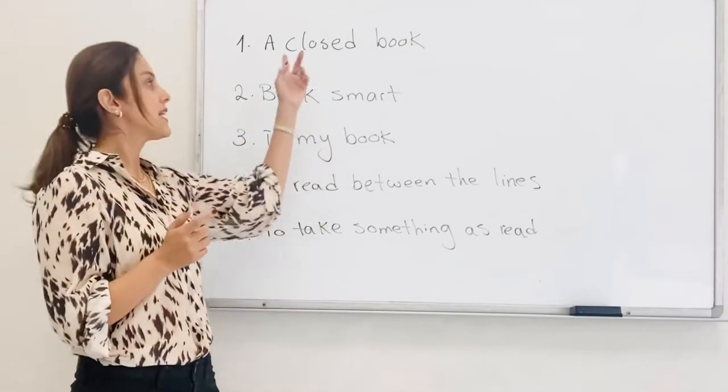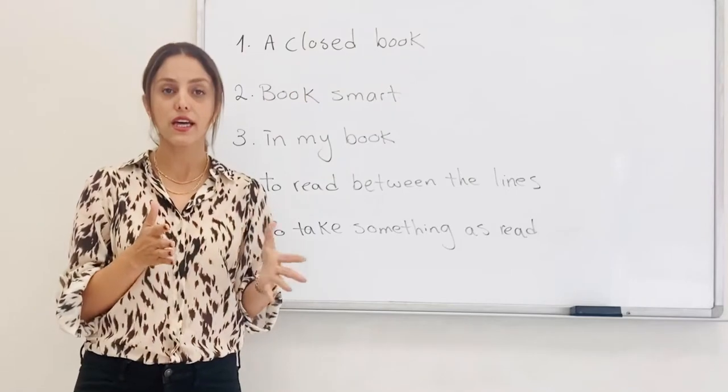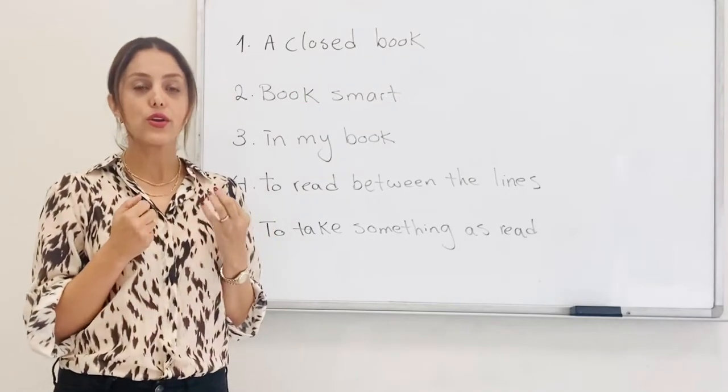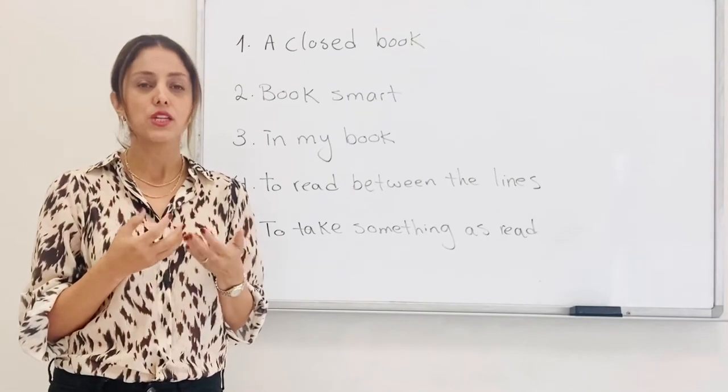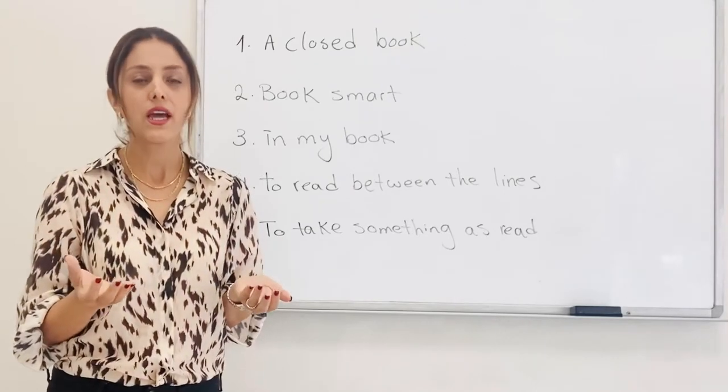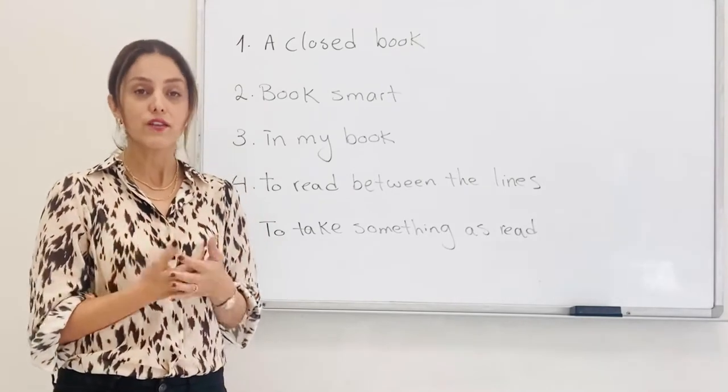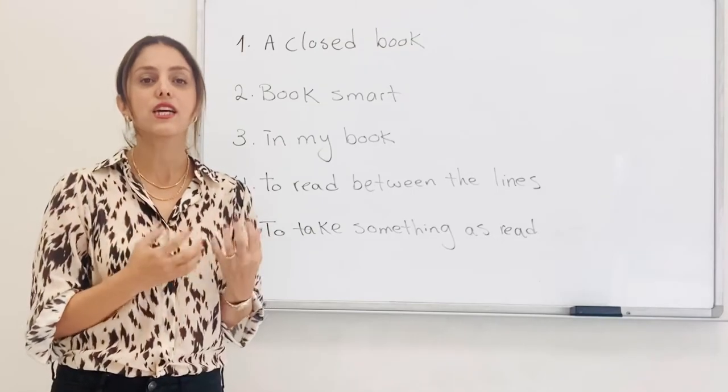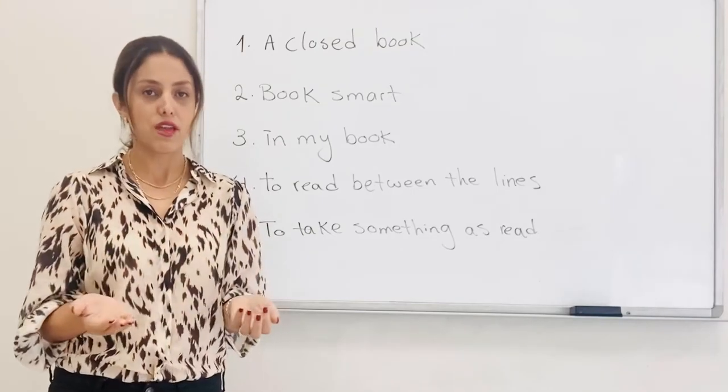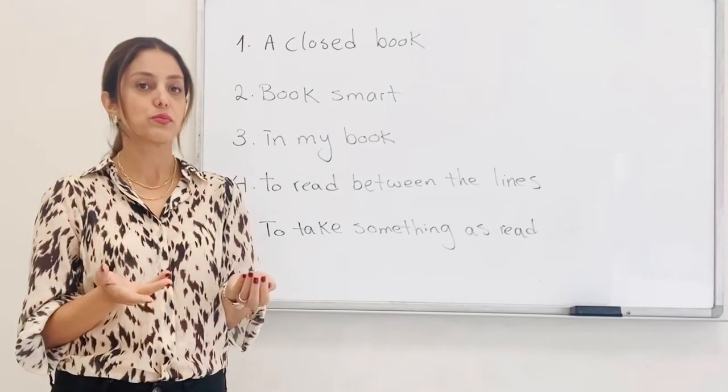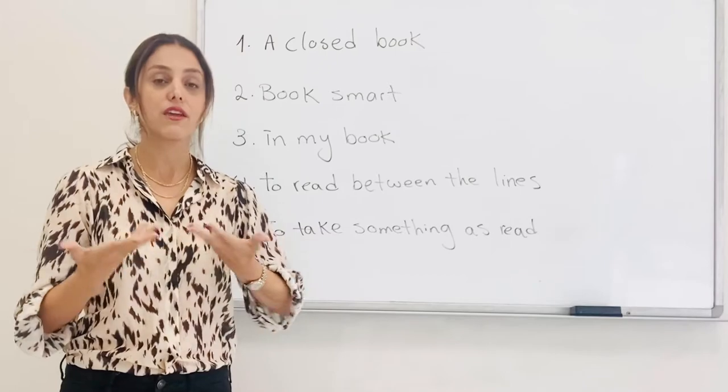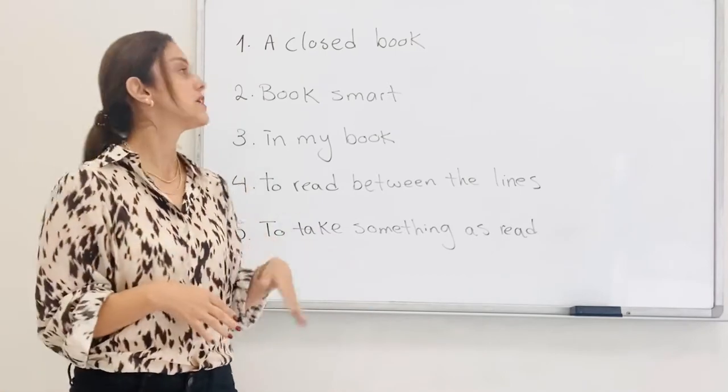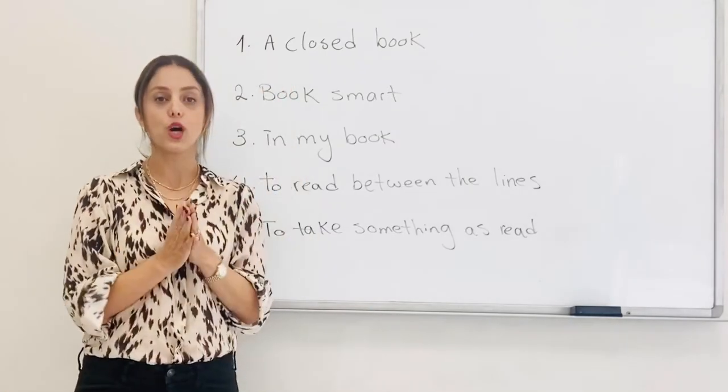First one, a closed book. You're referring to a person or a thing that you don't know much about. For example, John is a closed book. Nobody knows anything about him. So probably he's so reserved, you don't know anything about him. You don't have any information about him. He's a closed book.